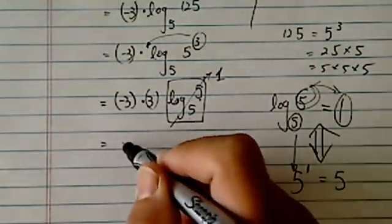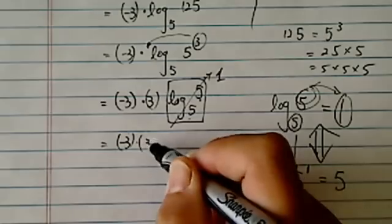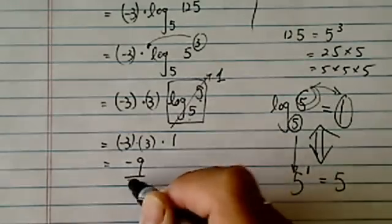It doesn't really cancel. Anyway, so you have minus 3 times 3 times 1, and the answer is minus 9.